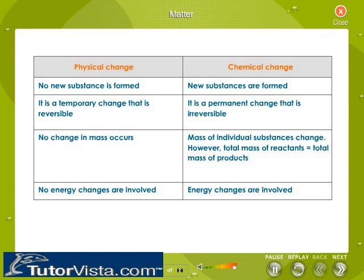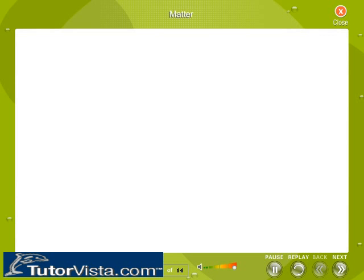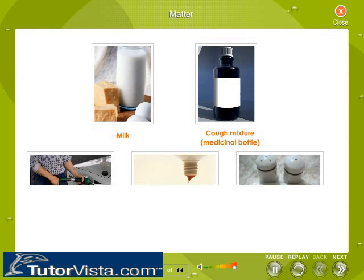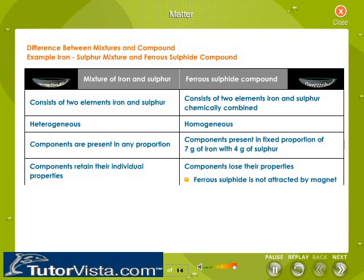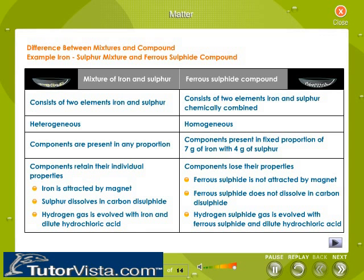The differences between physical and chemical changes are illustrated in a table. Here are common mixtures that we use daily. The differences between mixtures and compounds, with reference to the iron-sulphur mixture and the compound ferrous sulphide, are also tabulated.